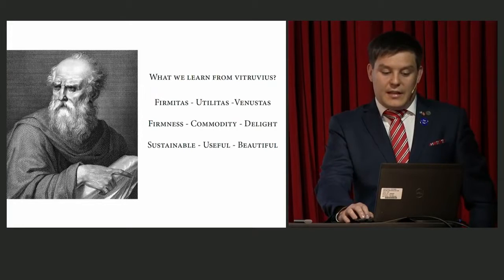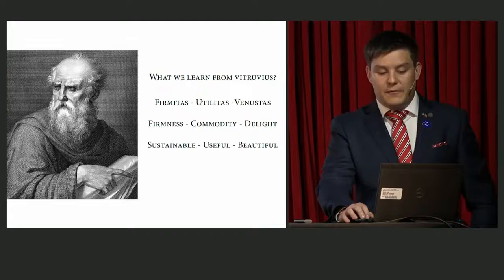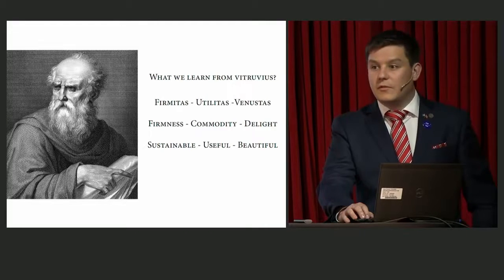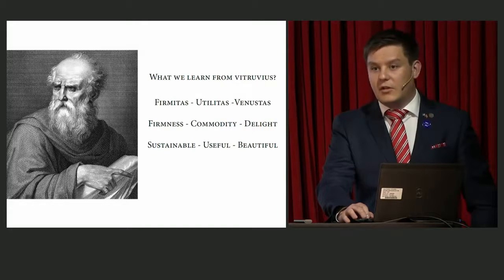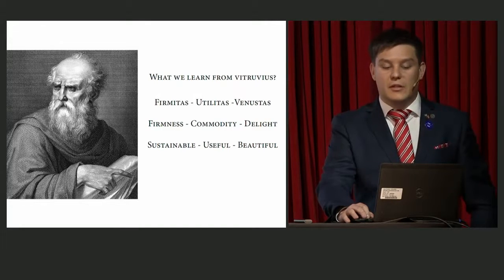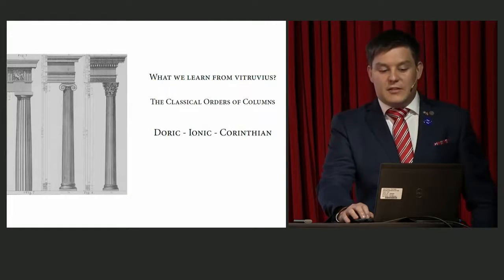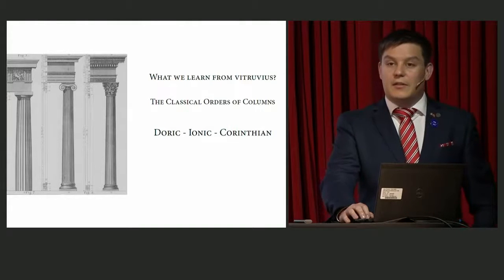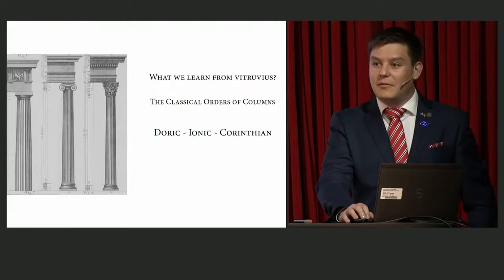Vitruvius tells us firmitas, utilitas, venustas — or firmness, commodity, and delight. What's sustainable, useful, and beautiful? These are the three major parts and the questions you have to ask yourself every time you're judging architecture. And finally, he teaches us the classical orders and the columns — the Doric, Ionic, and Corinthian. And I can say to our delight, we're surrounded by them today here in this beautiful room.